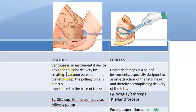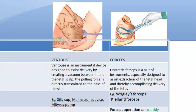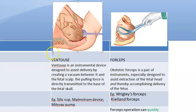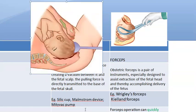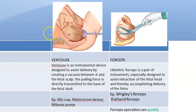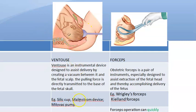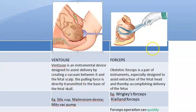What is ventouse? It is an instrument where you want to create vacuum between it and the fetal scalp, and then you pull - the pulling force is directly transmitted to the base of the fetal skull. Basically you are trying to pull the baby out by vacuum. There are some indications: you want to cut short the second stage of labor, or there is prolonged labor, or fetal distress. Examples include silk cup, Malmstrom device, Midivac pump, etc.